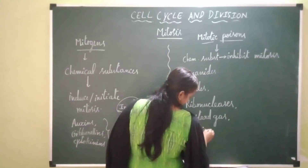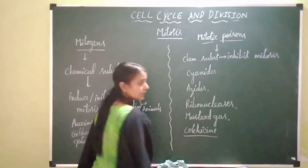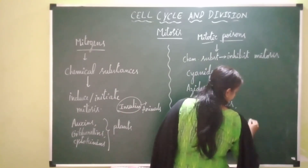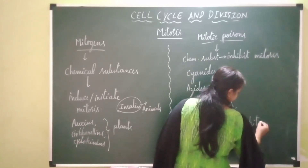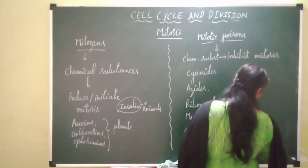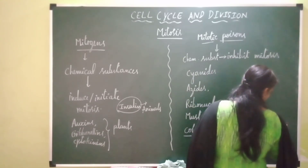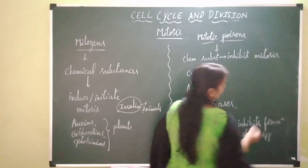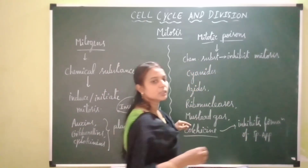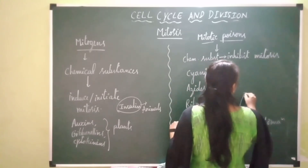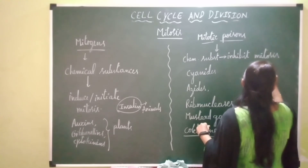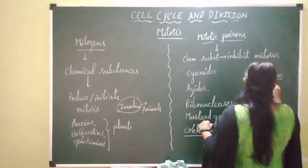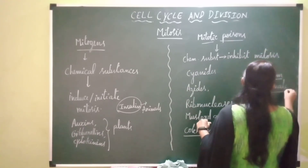Colchicine is a chemical which inhibits mitosis by inhibiting the formation of spindle fibers, or the spindle apparatus. This colchicine is a chemical substance and it is obtained from a plant called Colchicum autumnale. This plant called Colchicum autumnale belongs to the family Liliaceae.